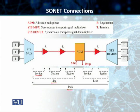A section, as you can see in this slide, is the optical link that connects two neighboring devices. It doesn't matter what those neighboring devices are. If we have a multiplexer connected to another multiplexer, that is called a section. A link connecting a multiplexer to a regenerator is also called a section, and a regenerator to regenerator link is still called a section, as long as they are neighboring devices.